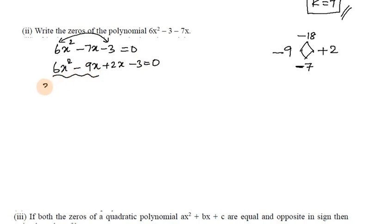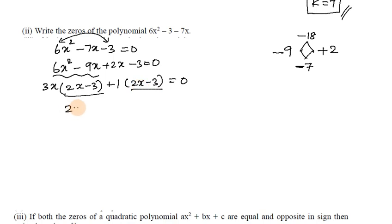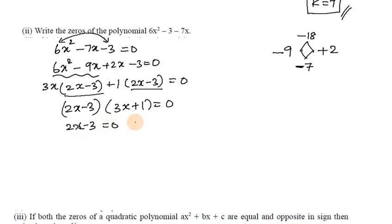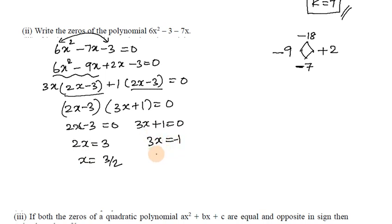Factoring gives (2x - 3)(3x + 1) = 0. Setting each factor to zero: 2x - 3 = 0 gives x = 3/2, and 3x + 1 = 0 gives x = -1/3. These are the two zeros of the polynomial.